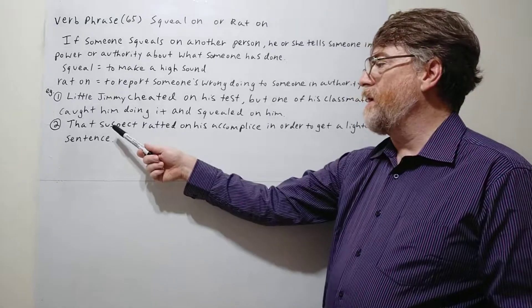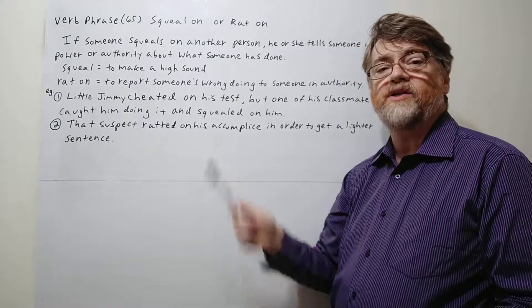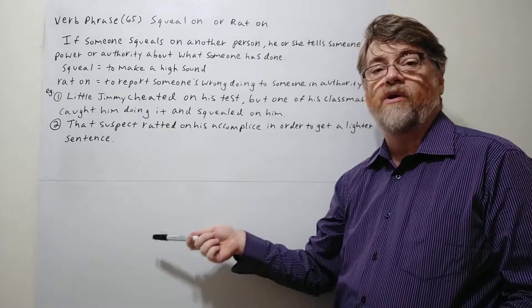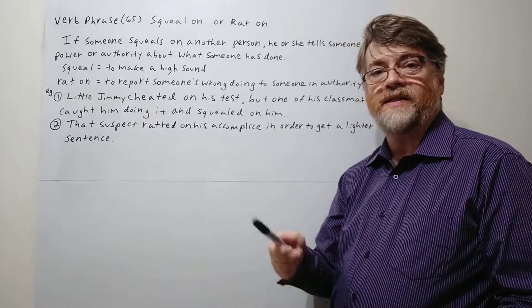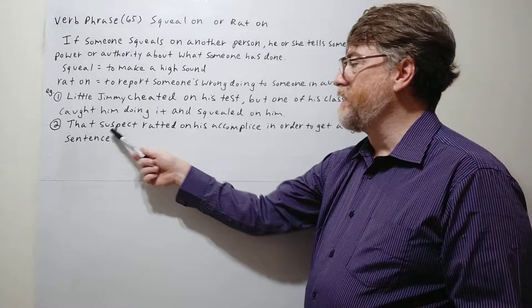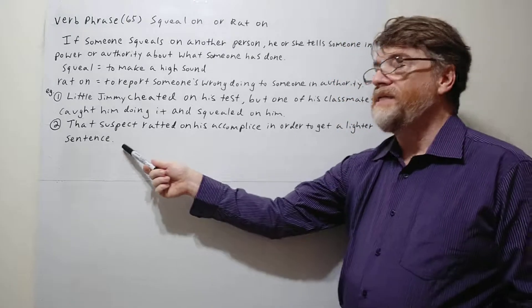Let's look at number two. That suspect ratted on his accomplice. Remember, an accomplice is somebody who you do a crime with or you do something bad with. If another person works with you, they're an accomplice. So that suspect ratted on his accomplice in order to get a lighter sentence.